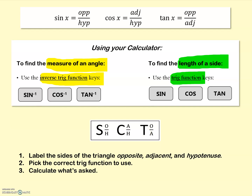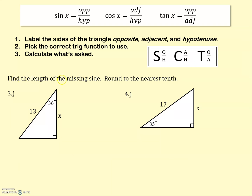Let's do an example. In these examples, it says find the length of the missing side, round to the nearest tenth. The missing side is labeled with an x, so we're going to find x. We're given an angle measure and two sides. Let's label our opposite, adjacent, and hypotenuse. The hypotenuse is always across from that right angle. The opposite is always across from the angle we're talking about — in this case, the 36. And the side next to the angle but not the hypotenuse is our adjacent.